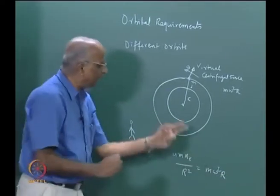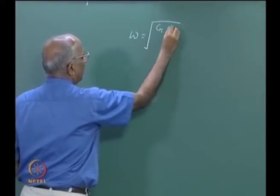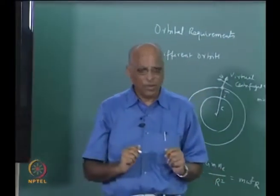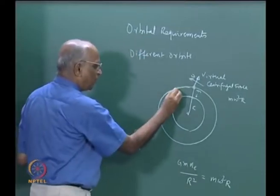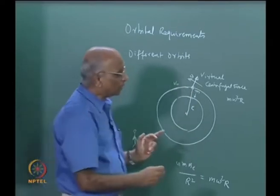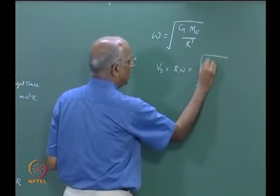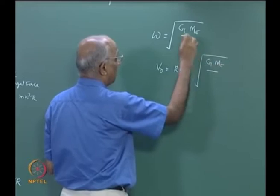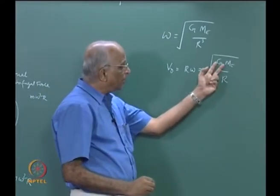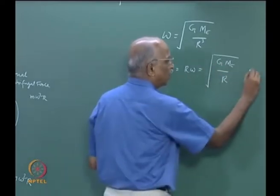And therefore we were able to get the angular velocity of rotation: ω = √(GMe/r³), in radians per second. We also went one step further, wanting to find the orbital velocity V0. We told ourselves V0 = r·ω, and therefore V0 = √(GMe/r). If we express G in Newton·m²/kg², mass of the earth in kilograms, and r in meters, the unit we get is meters per second. This is the orbital velocity.